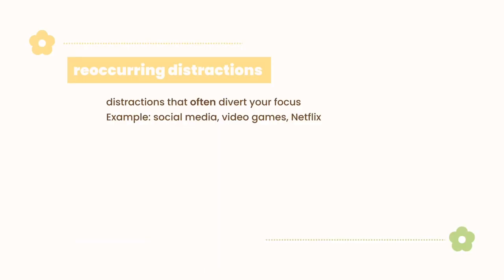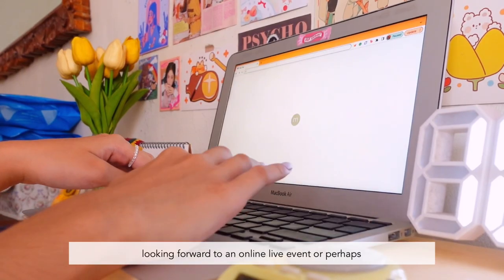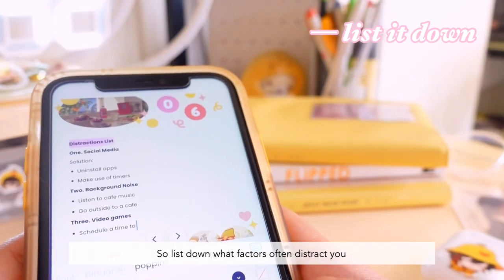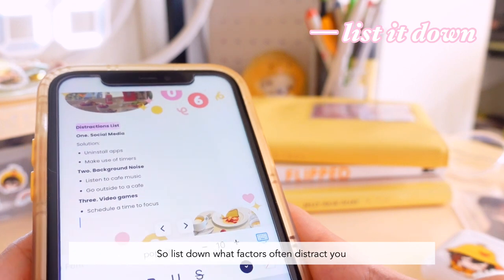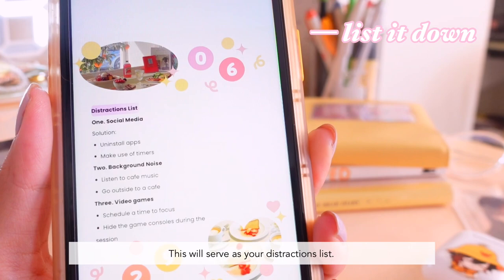There can be recurring distractions — these are distractions that often divert your focus, such as social media. But there are also situational distractions — these are possible distractions that can divert your focus at a specific time and session, for example, looking forward to an online live event or the current construction noise happening around your neighborhood. So list down what factors often distract you and could possibly distract you at that time; this will serve as your distractions list.